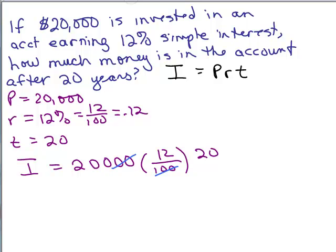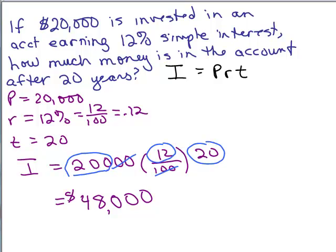I can cancel that hundred with two of those zeros. And what does that give me in interest? Well, I have $200 times 12 times 20. So 2 times 2 is 4 times 12, that's 48, and then how many zeros do I have? 1, 2, 3 zeros. So that's what you make in interest. Pretty amazing, isn't it? In other words, way more than your original investment.